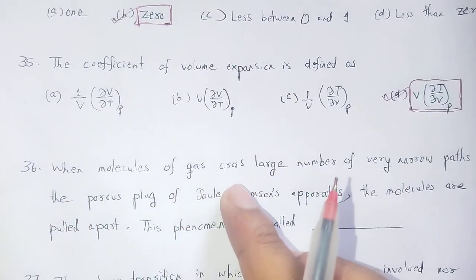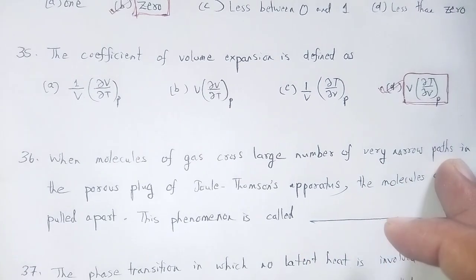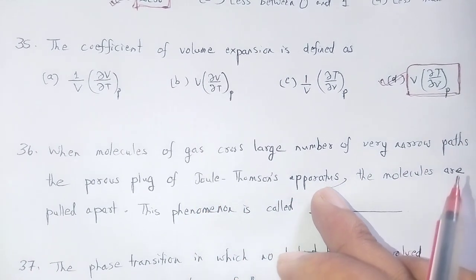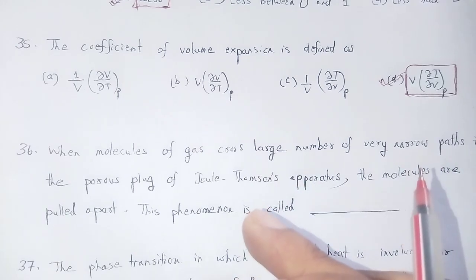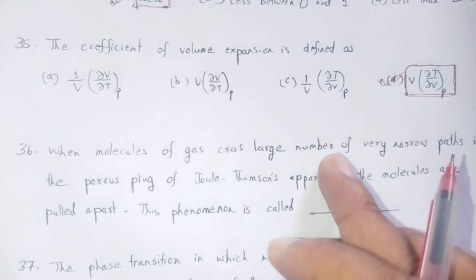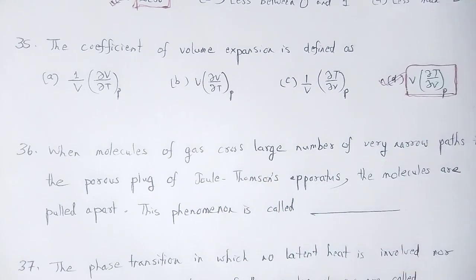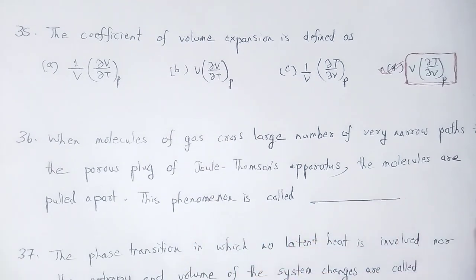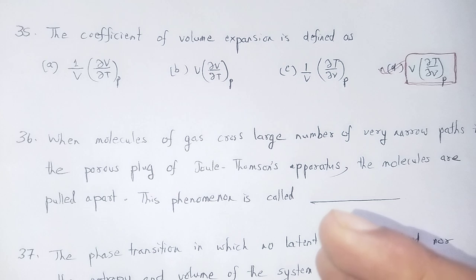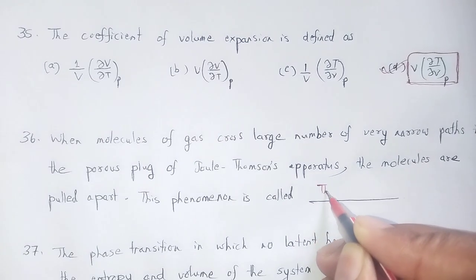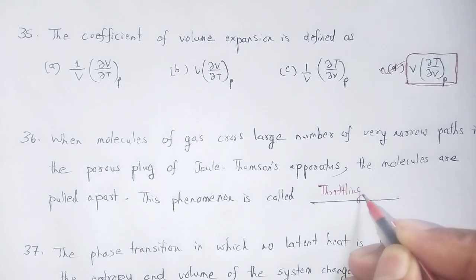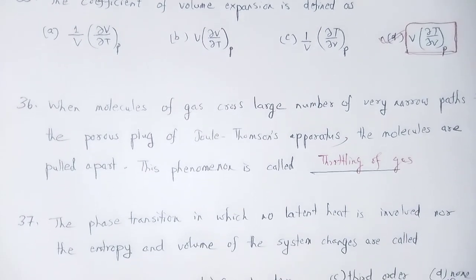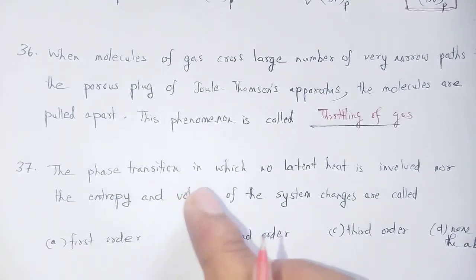When molecules of a gas cross a large number of very narrow paths in the porous plug of the Joule-Thomson apparatus, that phenomenon is called throttling, or throttling of gas.